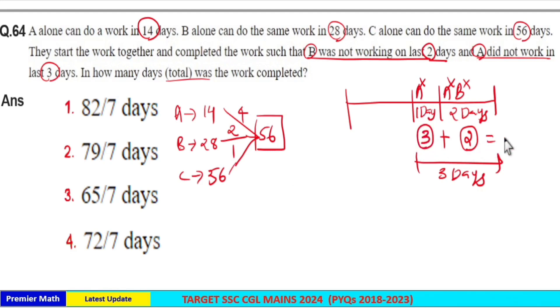So total 5 units completed in 3 days. So 56 unit is the total work, out of this 56, 5 units completed in 3 days by B and C. So 56 minus 5, 51 unit is the remaining work.